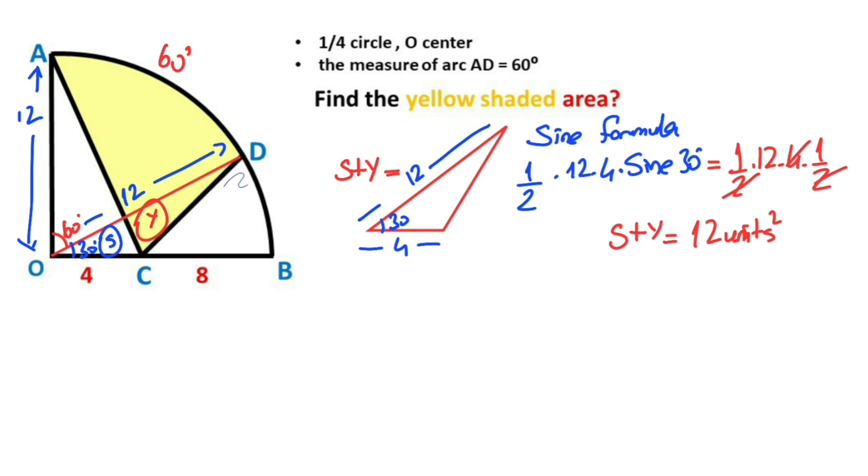Now, let's call this area T. So S plus Y plus T equals this circle sector area. We know that here is 30 degrees, and this side is 12 because it's the radius.